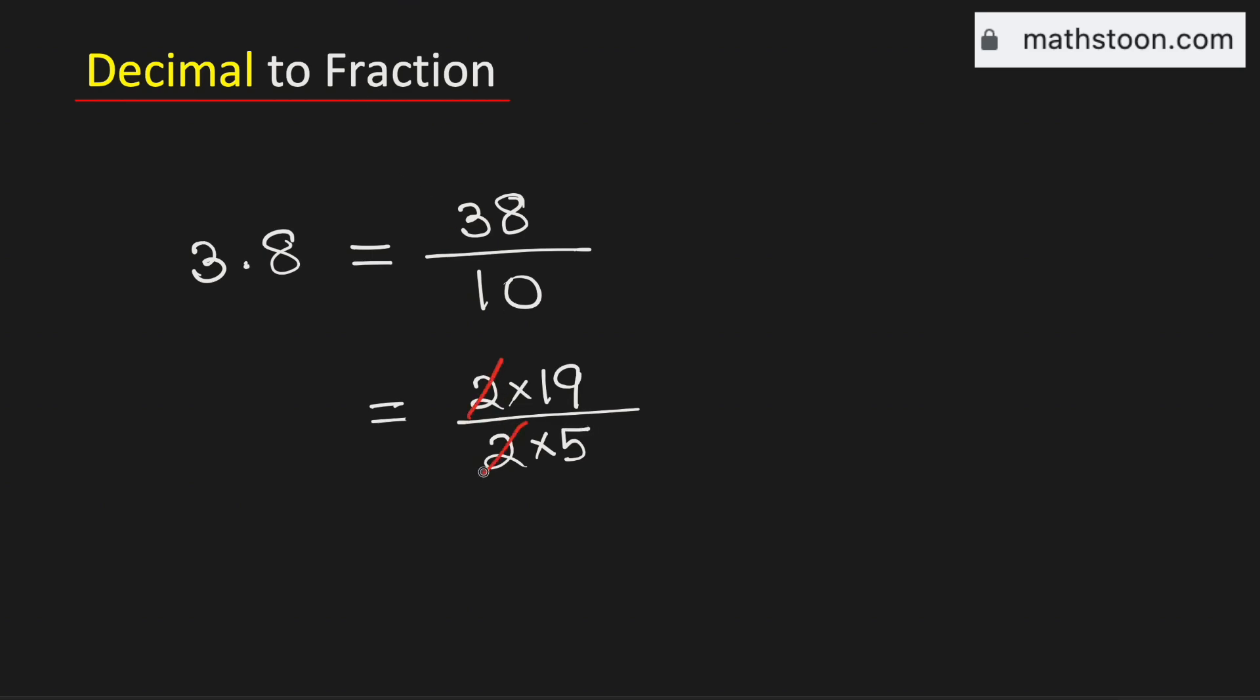Now cancel the common 2, therefore it will be equal to 19 over 5. This fraction cannot be simplified further because both 5 and 19 are prime numbers.